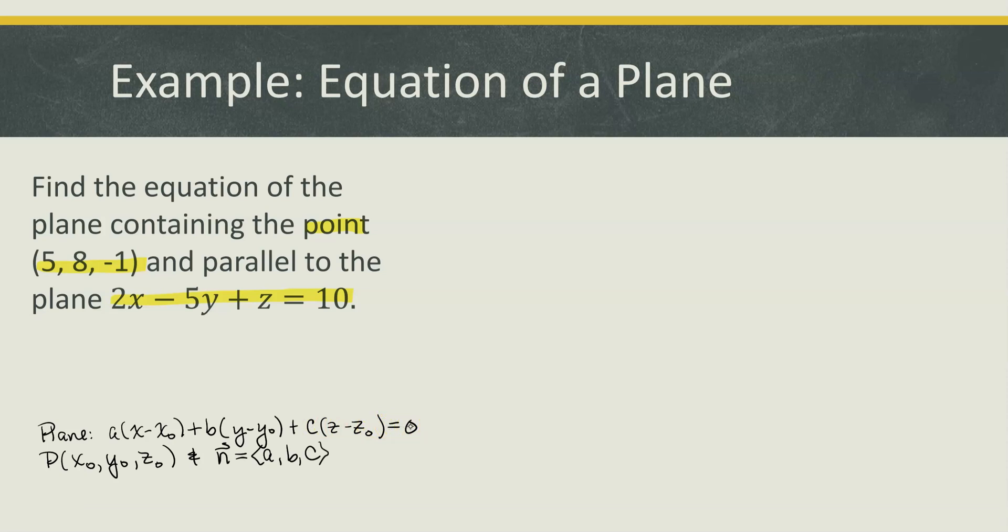This is an equation where the point in the plane is x naught, y naught, z naught and the normal vector to the plane is a, b, and c.